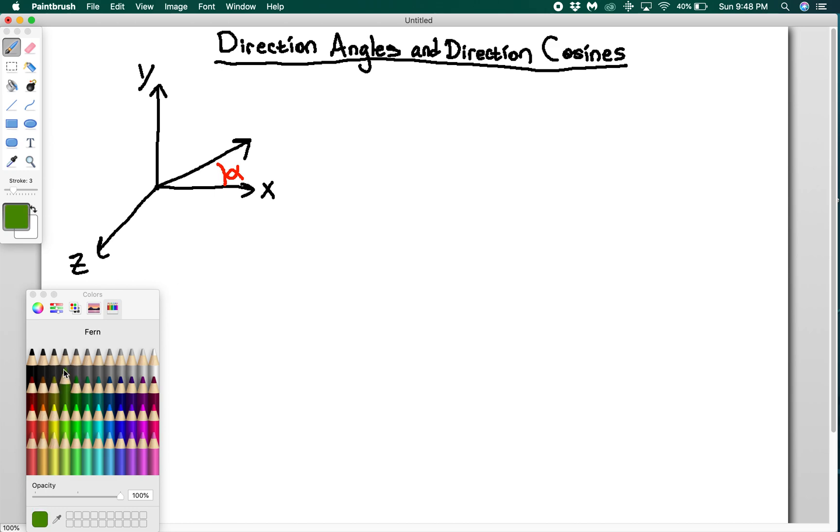And then let's go to green for beta. So beta is the one it makes with the y-axis. So this is going to be beta. This is one of my other direction angles. And then finally, we're going to have z, and this is going to be gamma.